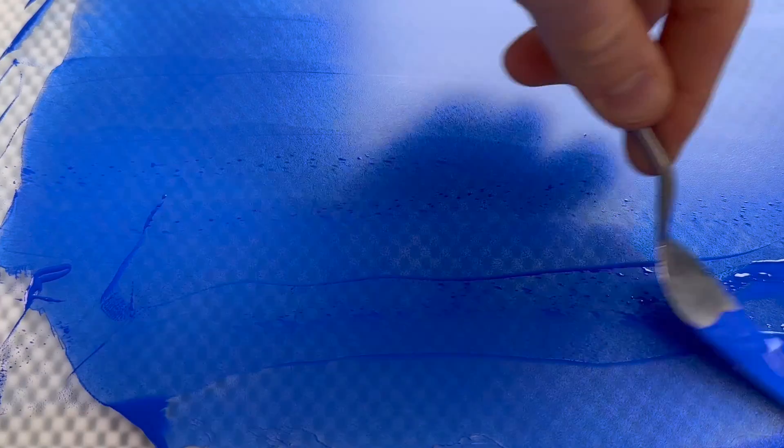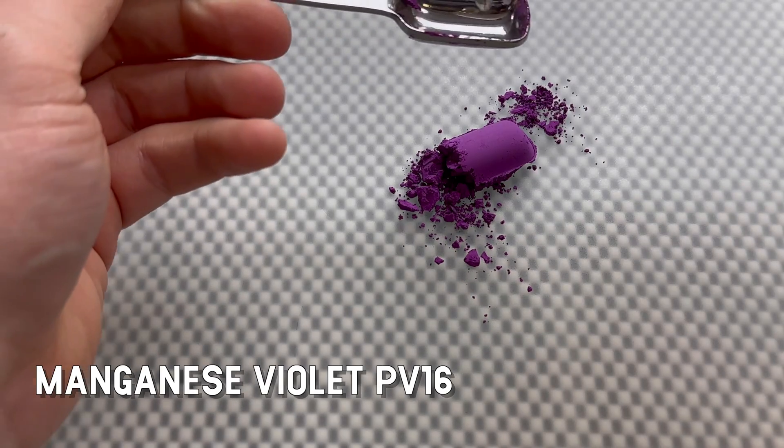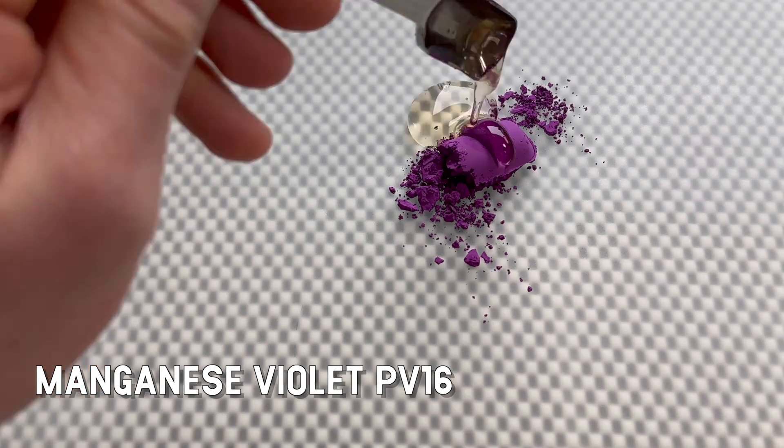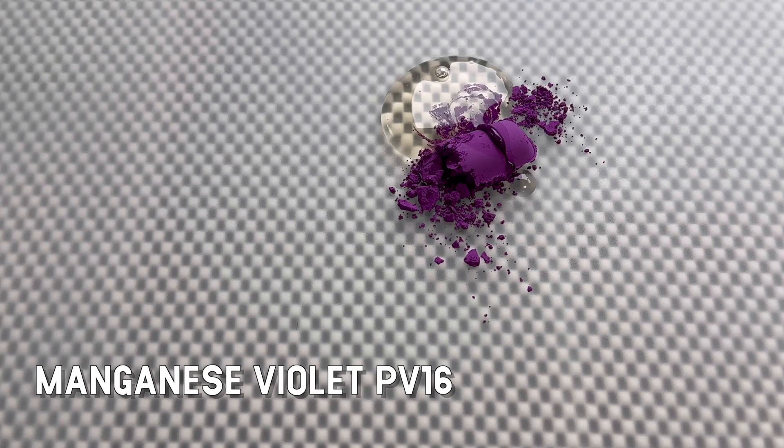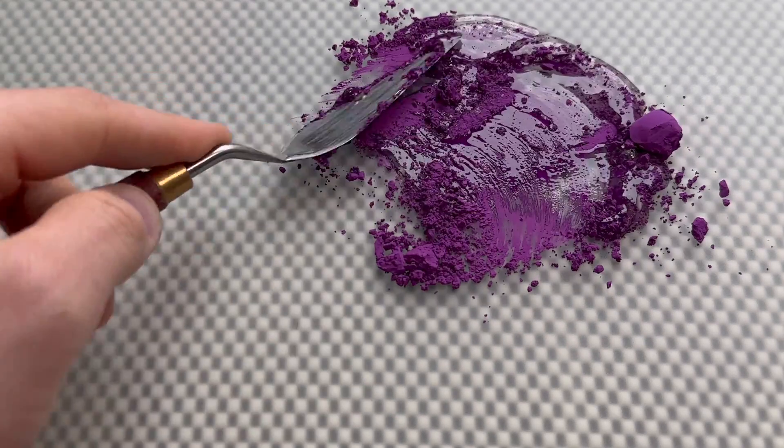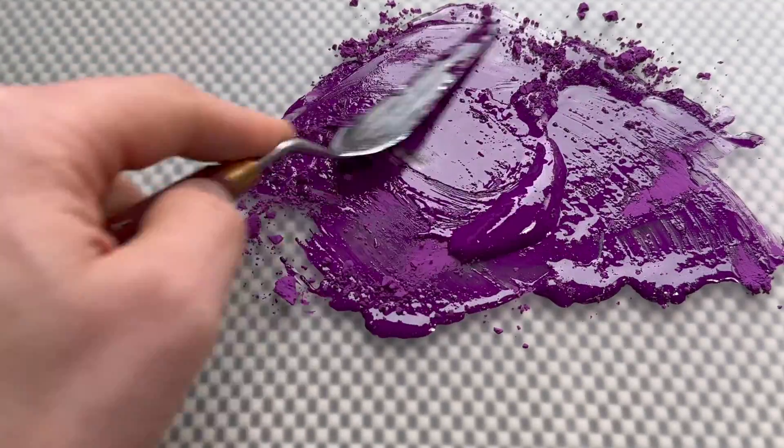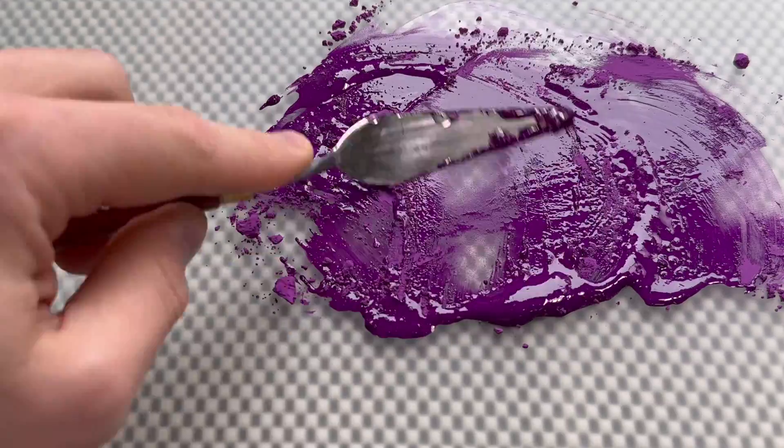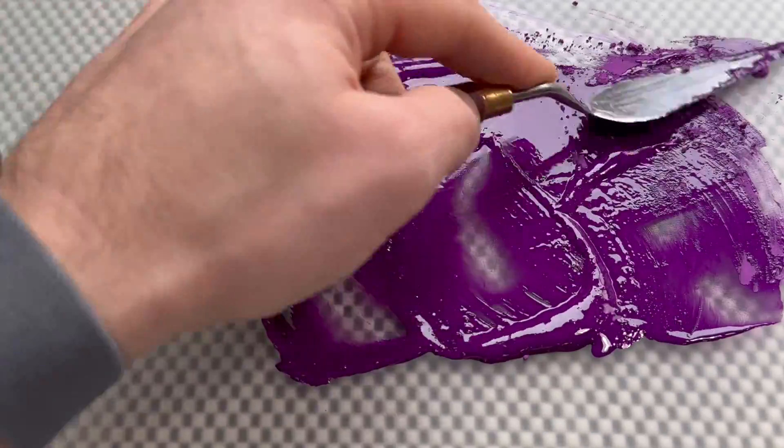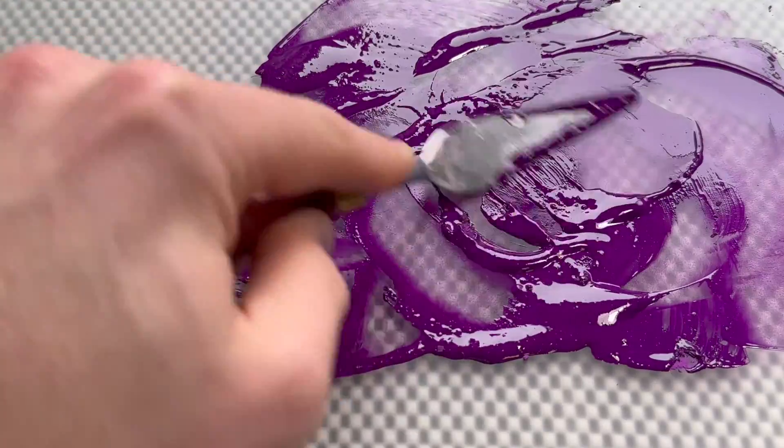Then we have manganese violet. It was discovered in the mid-19th century and it is the first violet pigment that was both stable and non-toxic, making it quite an important addition to the range of available colors for artists and manufacturers, not only for art but also cosmetics. It's been used for that since the beginning and still is being used for that purpose.